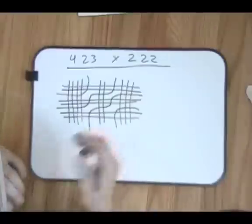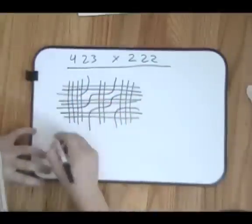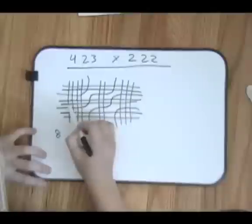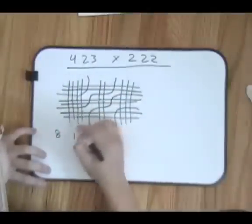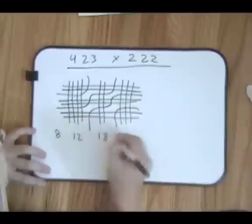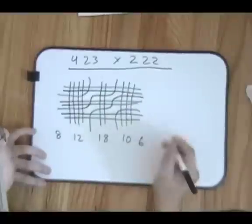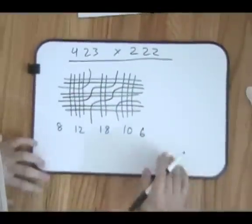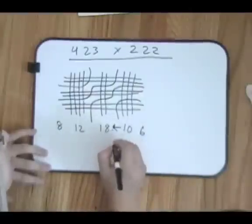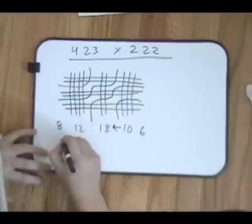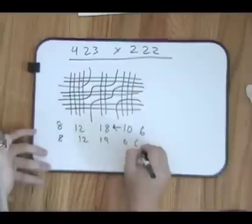Now we count the intersections like before. So that's 8, 12, 19, 0, 6, and over here 6.